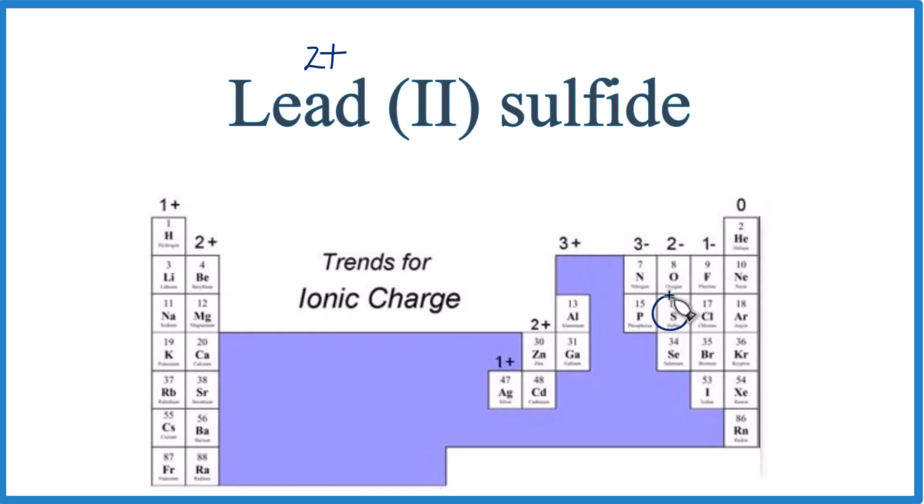Sulfide, right here, is sulfur. All of the elements in this group—oxygen, sulfur, selenium—they're 2-. So we're going to have a 2- ionic charge for the sulfide ion.